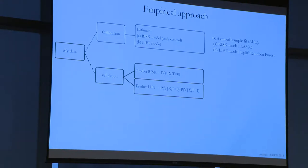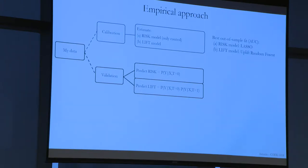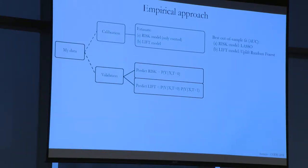I want individual-level estimates for both of these. I did a bunch of cross-validation to check which model was giving me the most accurate version. Then I took that to the second dataset I hadn't used at all, and for each person I predict their risk and their lift.